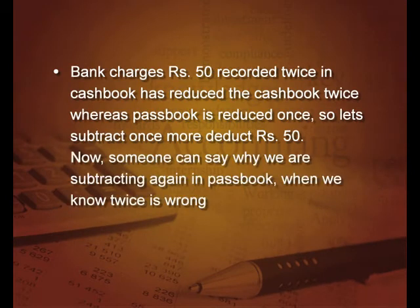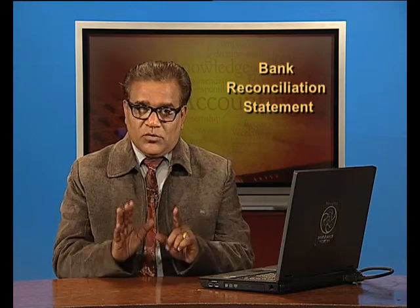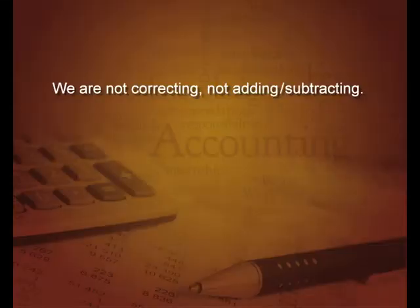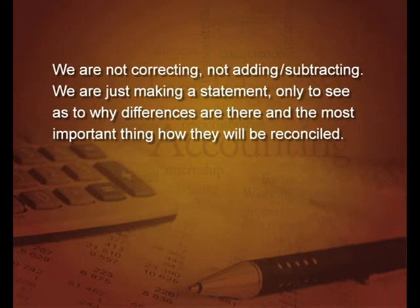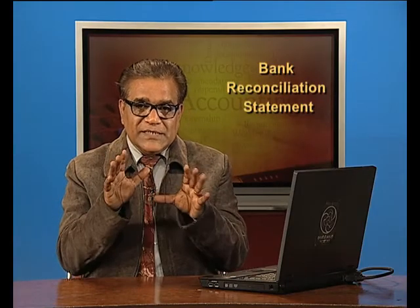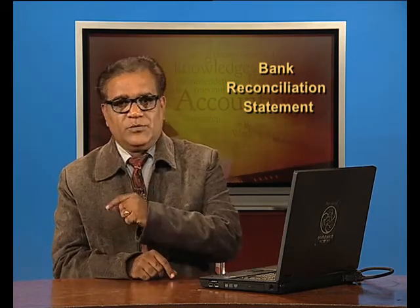Someone may ask why we are subtracting again in the pass book when we know that twice is wrong. We are not correcting anything in the books. We are just making a statement to see why differences exist and how they will be reconciled. Reconciled means only reconciled, not corrected. You cannot go to the cash book or pass book and correct them. We are just trying to find out why the differences are there and how they can be reconciled.